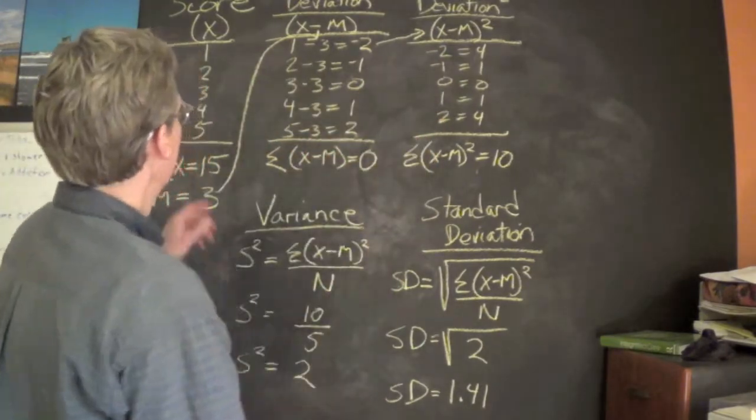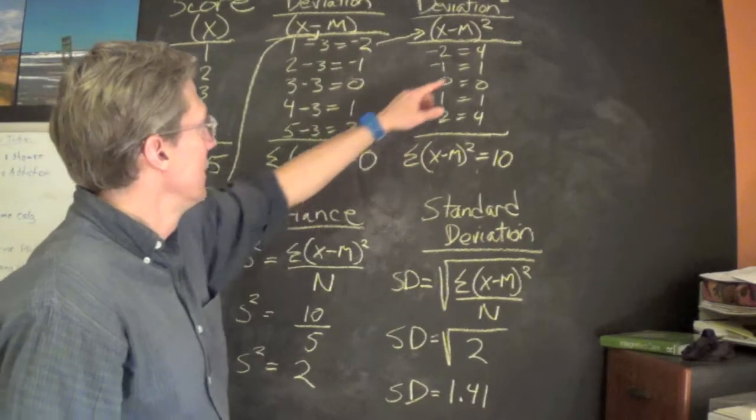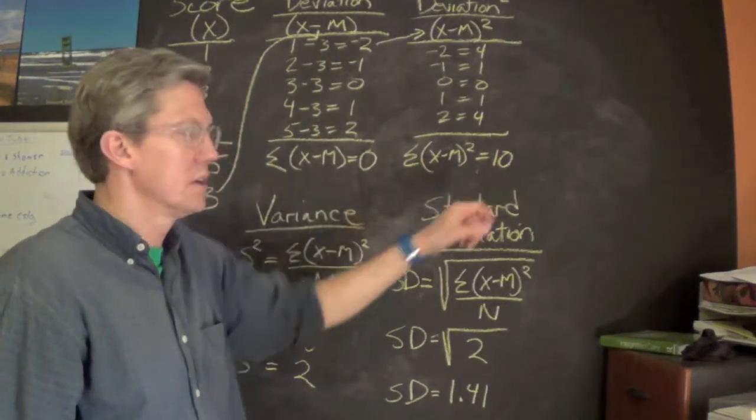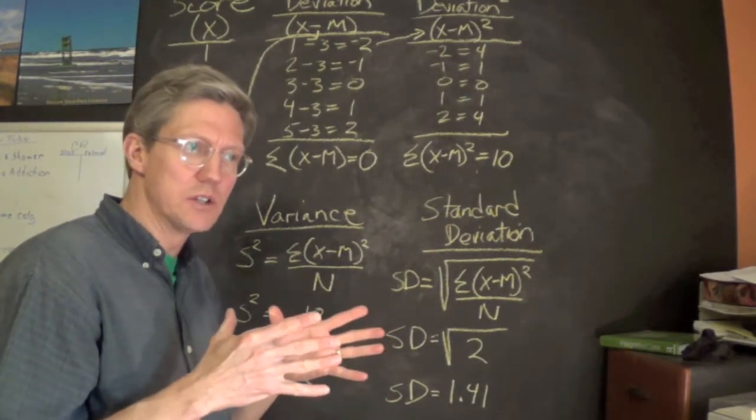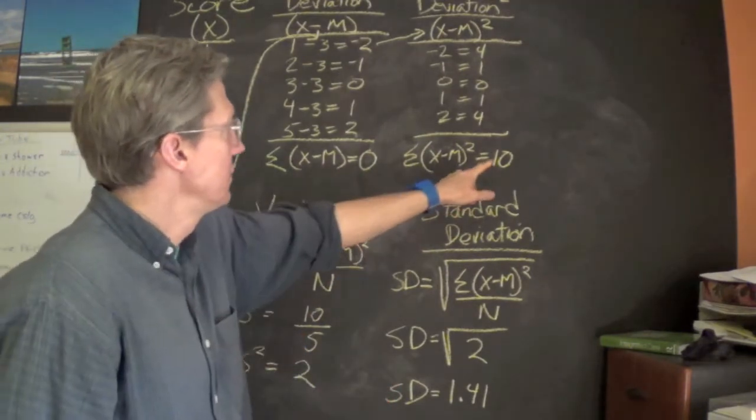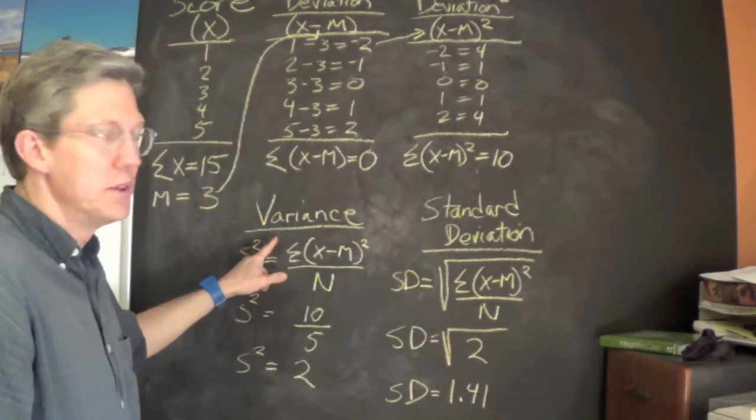We squared the deviations so that we would get a number we can work with, because we're still wanting to have a central number for the data set that tells us the degree to which numbers vary from the mean. We're going to take the deviation squared and determine the variance.